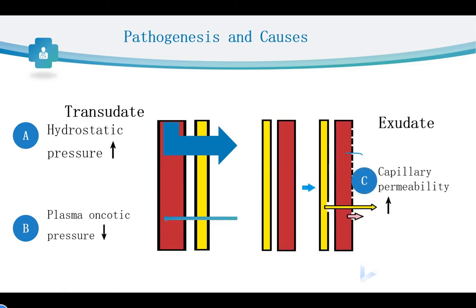The third mechanism of pleural effusion is increased capillary permeability. As the picture shows, the wall of the vessels is not integrated due to disease, and large molecular substances can transfer out of the vessels, finally forming an exudate.